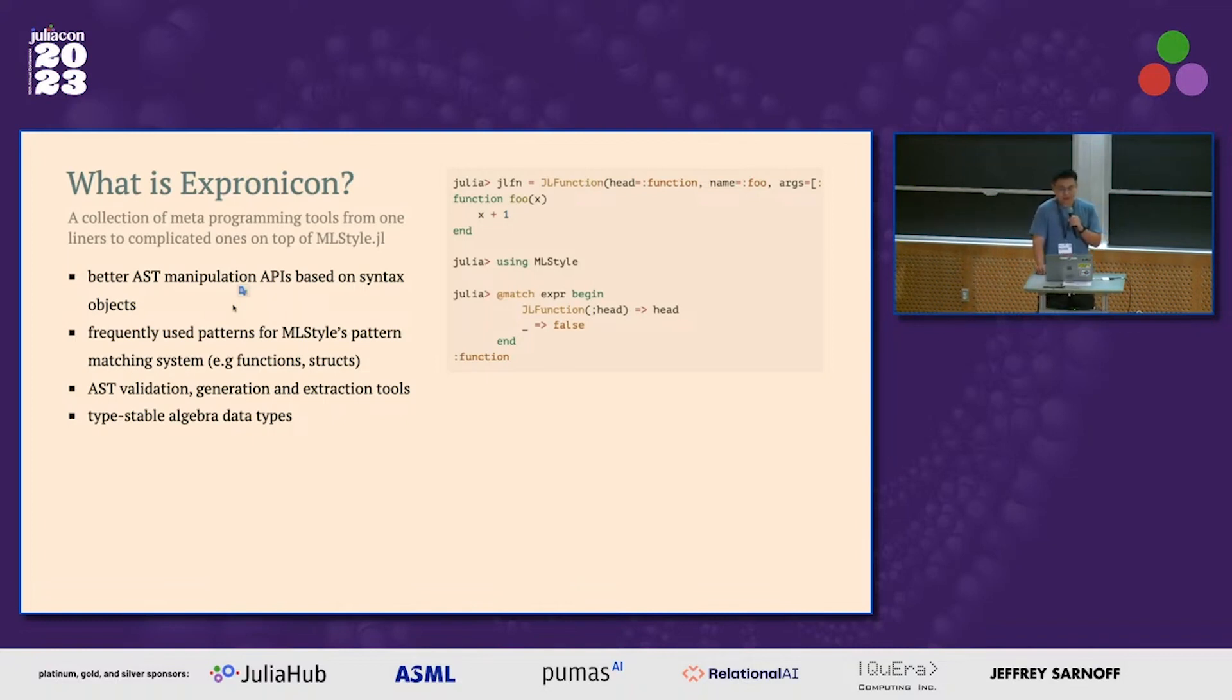So we provide some better AST manipulation APIs based on syntax objects. For example, on the right hand side, we provide a GL function structure that allows you to construct or directly pattern match a Julia function expression. For example, here I can just match, if this pattern match will just check if the expression is a function expression, if it is a function expression, we'll extract the function head to you, otherwise return false.